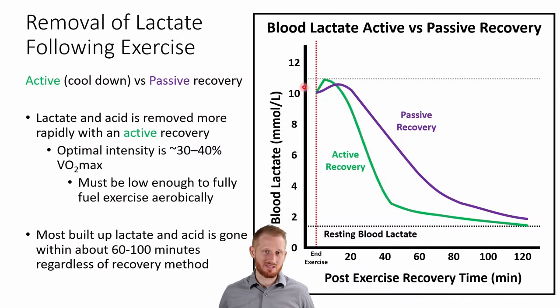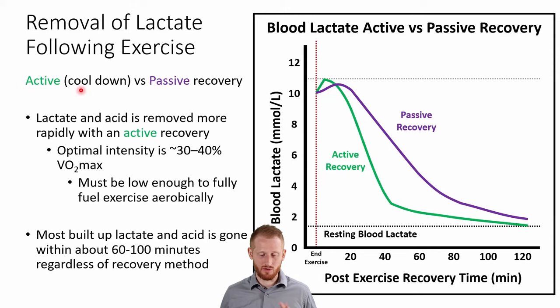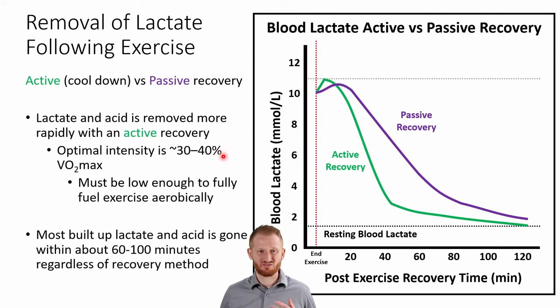In this video we're going to be talking about removing lactate from our body after intense exercise and muscle soreness. We have two different ways our bodies can recover from exercise: passive recovery, where you just sit or lay down and do nothing, and active recovery — a cool down. Looking at blood lactate over time, active recovery removes lactate faster. What's recommended is somewhere between 30-40% of your VO2 max — low enough to fuel exercise fully with aerobic metabolism.